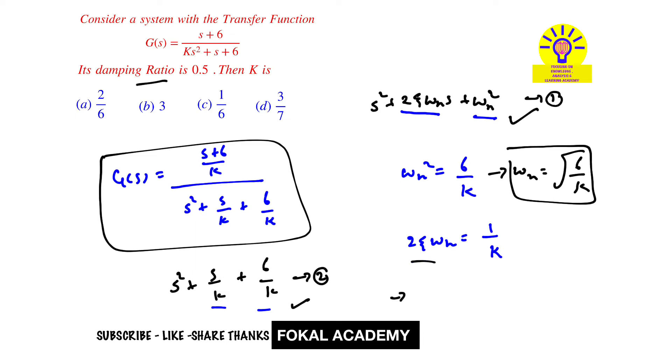So then we get 2 * 0.5 * sqrt(6/k) = 1/k. So this value is equal to 1. So it becomes sqrt(6/k) = 1/k. Now squaring on both sides then becomes 6/k = 1/k^2.